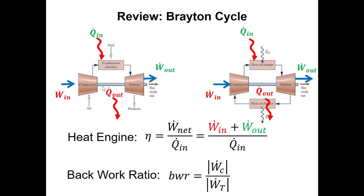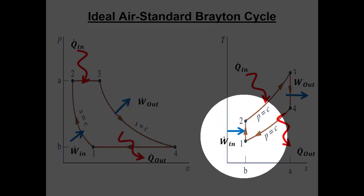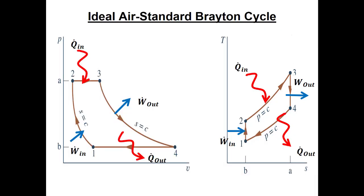Like the Rankine cycle we started with a basic four-component Brayton cycle to understand how the system works, which led us to drawing PV and TS diagrams. These diagrams show that heat addition and heat rejection happen at constant pressure — horizontal lines on the PV diagram. It's very important to identify the isentropic processes when the working fluid is an ideal gas because we have special relationships for those processes. In a Brayton cycle this occurs when adding work in the compressor and extracting work from the turbine.